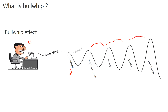That signal then goes from distribution center to factory, from factory to the tier-one supplier, and from there to their own tier-one suppliers. The demand signal keeps distorting as we move upstream. The customer may have ordered 100, but as the signal moves from one supply chain partner to the next, it keeps amplifying — so the signal seen at the tier-one supplier is much higher.